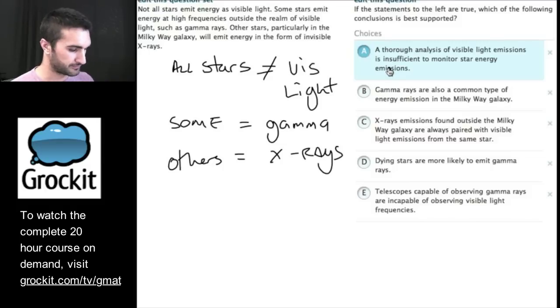Let's take a look at A. A thorough analysis of visible light emissions is insufficient to monitor star energy emissions. So this is saying, if you just look at visible light emissions, it's not enough to monitor star energy emissions. So this seems like a decent paraphrasing of what I said. Because not all stars emit visible light. So a thorough analysis of visible light emissions would be insufficient to monitor all energy emissions from stars because some of them do gamma rays and some of them do x-rays. Let's hold on to that.